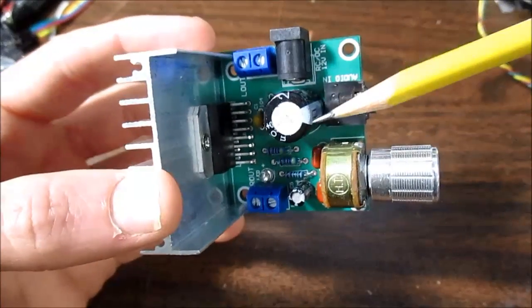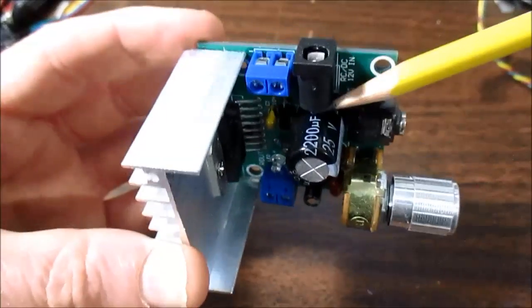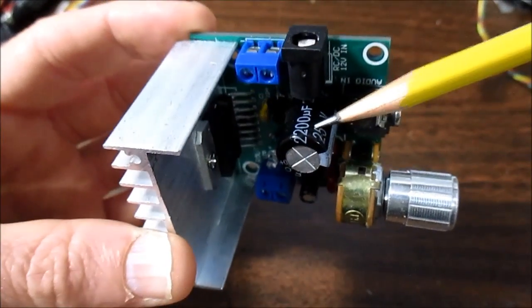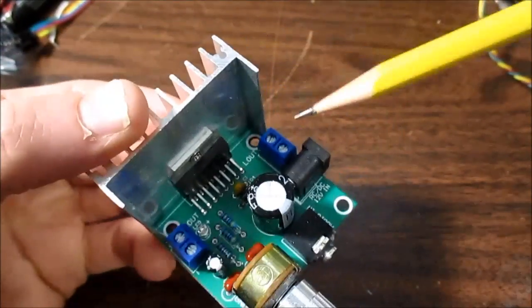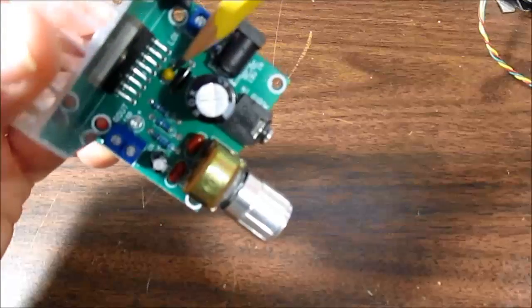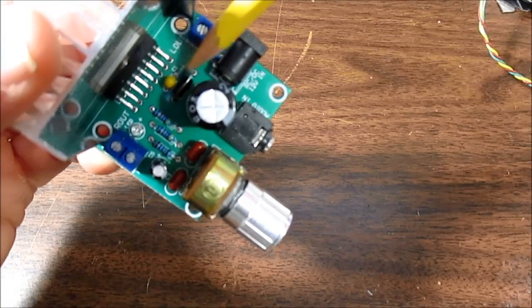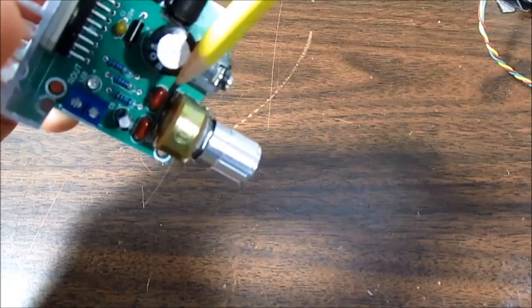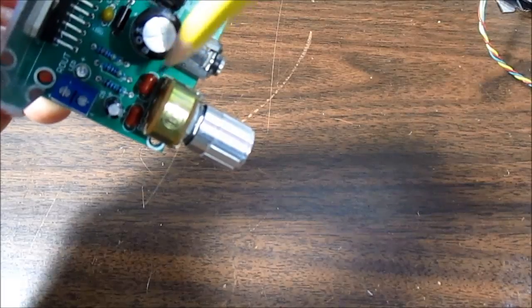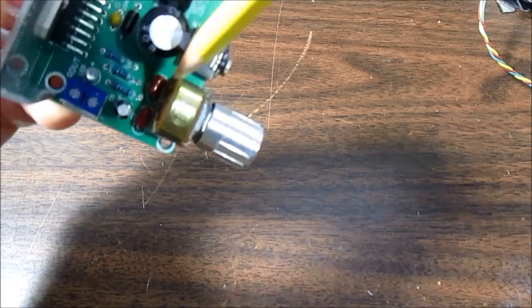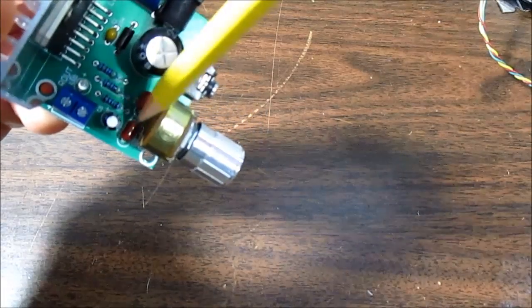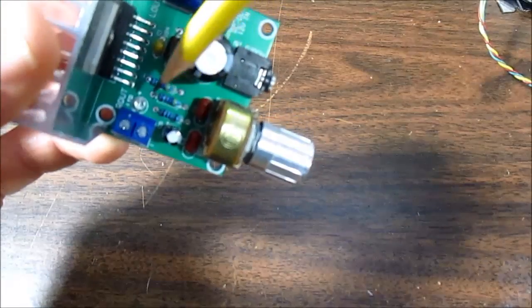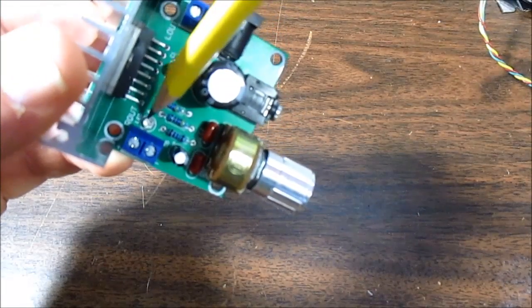Nice to see that they included a 2200 microfarad electrolytic capacitor and a ceramic capacitor across the supply rails near to the chip. Input coupling capacitors are of the film type. And there is a little LED on there.